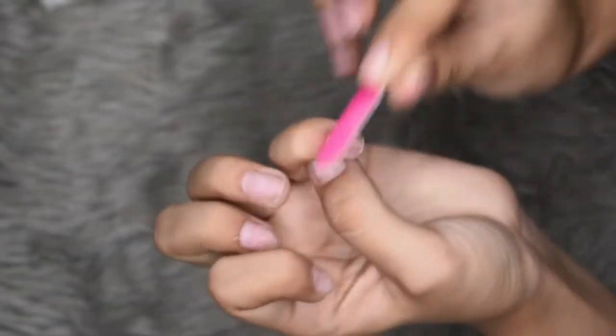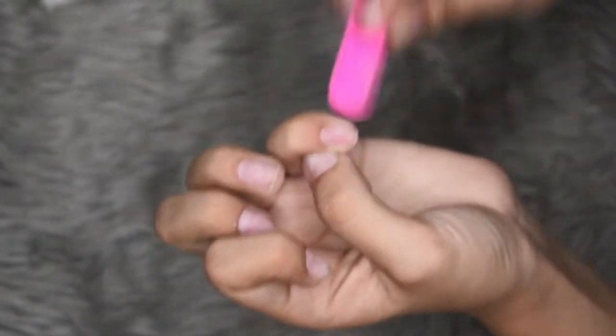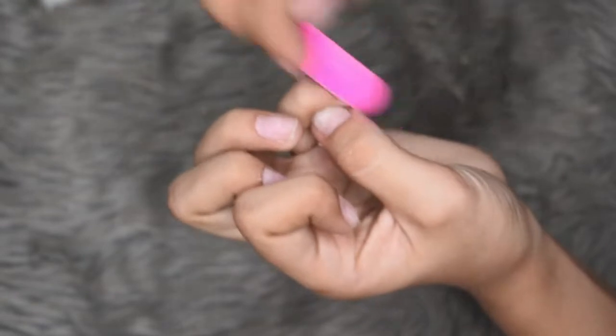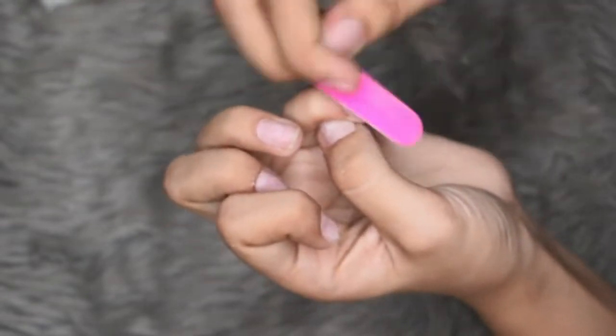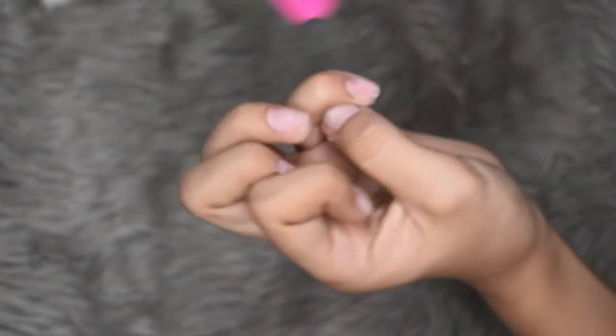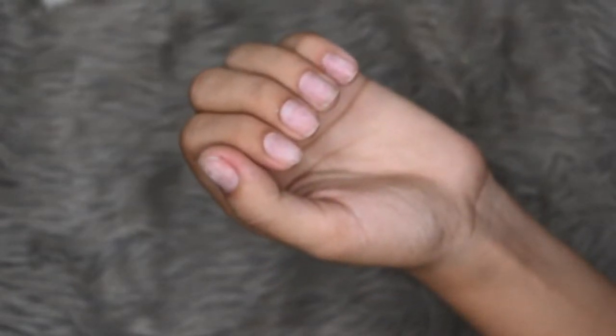The better you prep your nails, the longer your press-ons will last. The better you remove your cuticles, the longer they will last. Usually they can last up to two to three weeks with proper preparation.